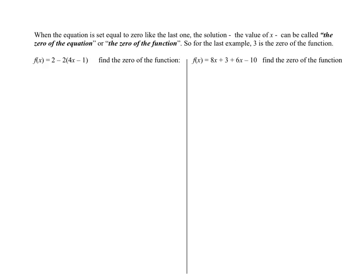Now at the very bottom of your page, I want you to pay attention to this. This is one more little strange thing about function notation. When the equation is set equal to 0, like the last question we just did, the solution, the value of x, can be called the zero of the equation or the zero of the function. So for the last example, 3 is the zero of the function. And you have to be very familiar with the wording of this.